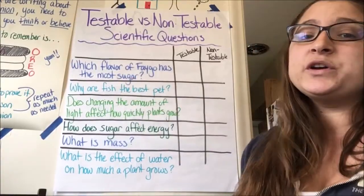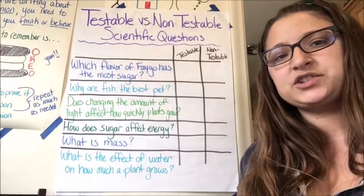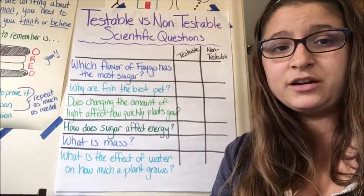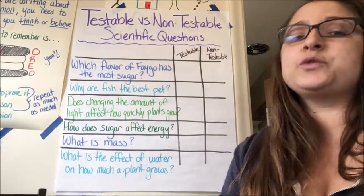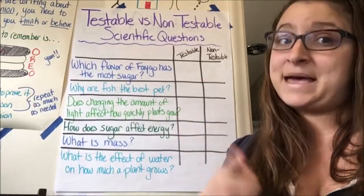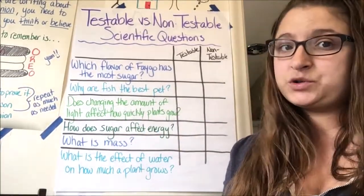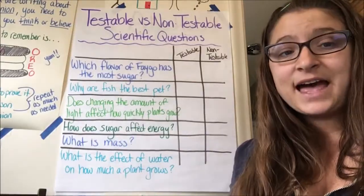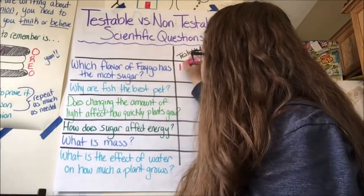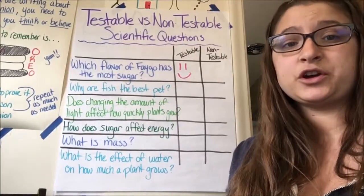The first one says: which flavor of Faygo has the most sugar? Could you design a scientific experiment to find that out? You could. You could look at the labels on them, or you could boil it out and collect all the sugar in the bottom — which could be messy but interesting. So you can find out which flavor of Faygo has the most sugar because you can test it. You could design an experiment to prove that answer. That makes it a testable question.